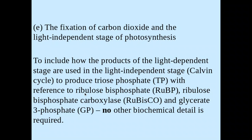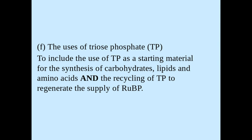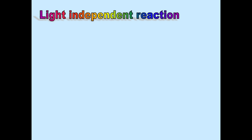Welcome biologists. In this session we're going to take a look at spec points E and F, which is looking basically at the light independent stage of photosynthesis. This occurs within the stroma inside the chloroplast. From the light dependent reaction we have the products NADPH and ATP, which are going to be used in the light independent reaction.